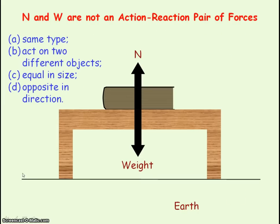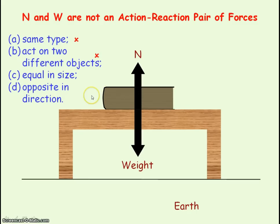It's important to note that the normal reaction force and weight are not an action-reaction pair under Newton's Third Law. They are not of the same type — one is a gravitational force and one is a normal reaction force. They are also not acting on two different objects; they are both acting on the book. Although they are equal in size and opposite in direction, because they don't satisfy the first two rules, they are not an action-reaction pair of forces.